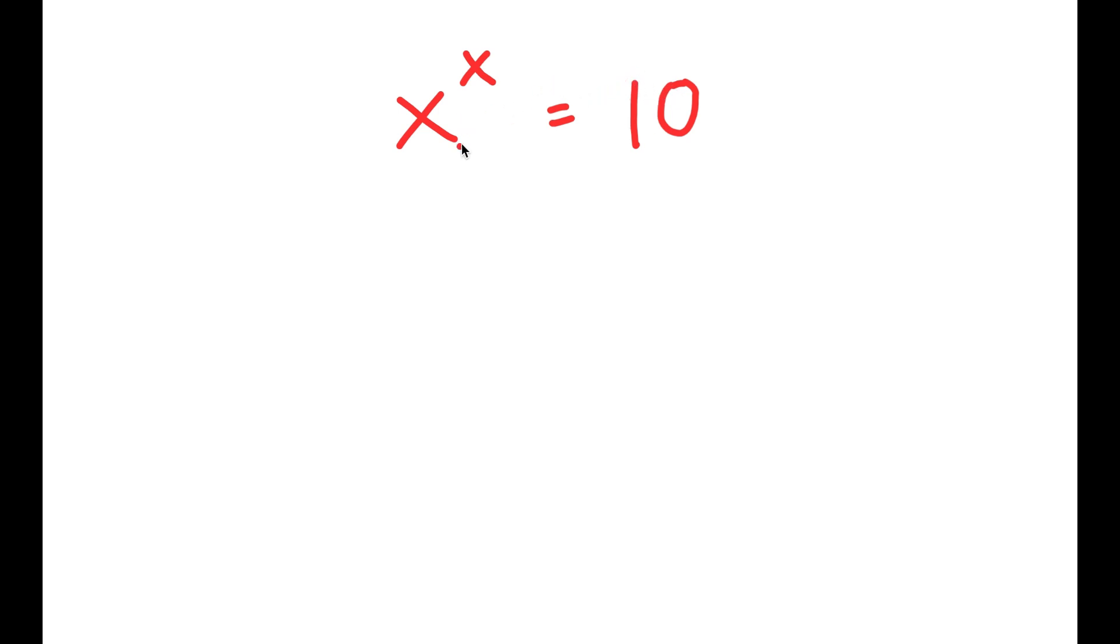So the reason many people get confused by this equation is because we have a variable to the power of a variable equals a number.